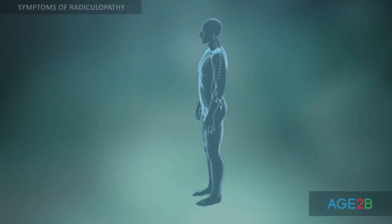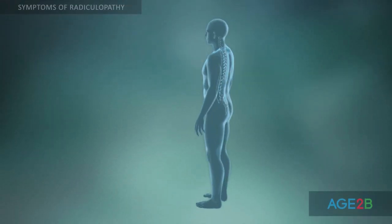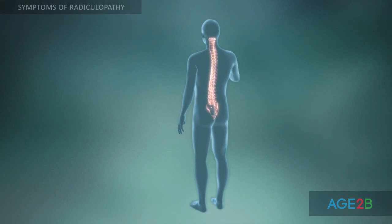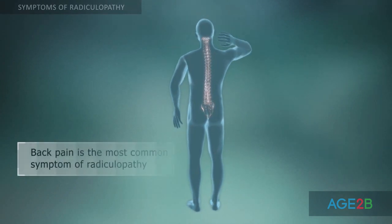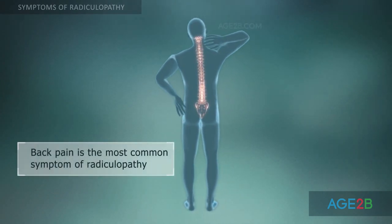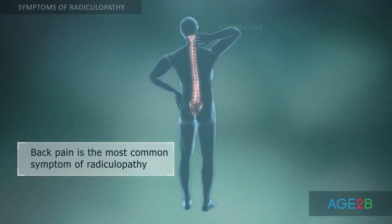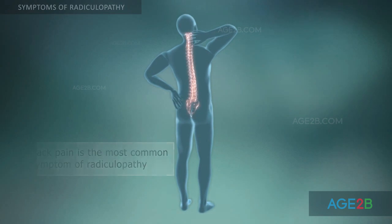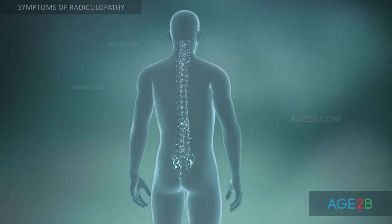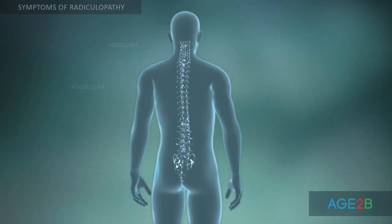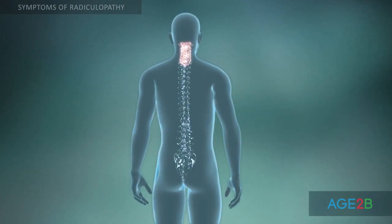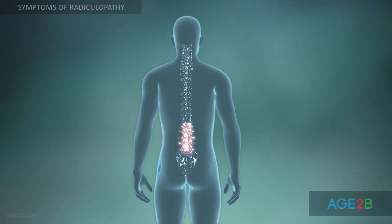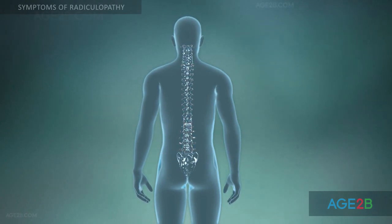The most common symptom of radiculopathy is back pain. It occurs due to compression of the nerve roots. Back pain due to radiculopathy can occur in the cervical, thoracic, or lumbar region of the spine.